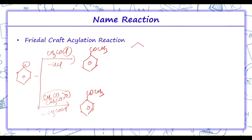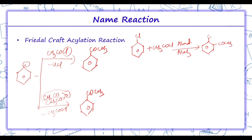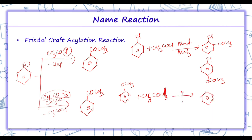For chlorobenzene, when acetylation is performed with acetic anhydride, the COCH3 group attaches at ortho and para positions, giving 2-chloroacetophenone and 4-chloroacetophenone. Similarly, for methoxybenzene, since the OCH3 group is ortho-para directing, the products formed are 2-methoxyacetophenone and 4-methoxyacetophenone.